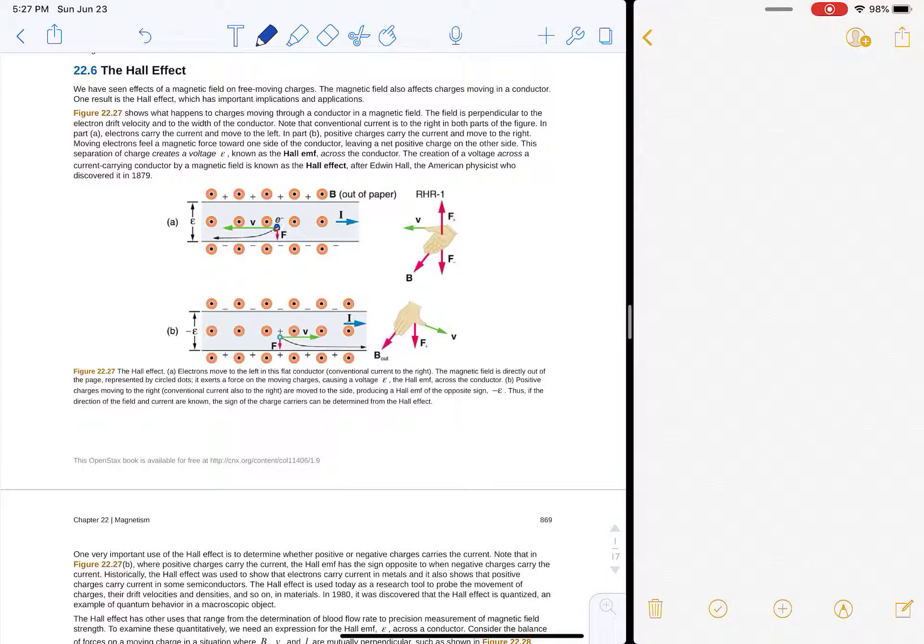The magnetic field is going to cause the electrons to be deflected to one side of the conductor, which ends up creating a separation of charge, positive and minus charges, which ends up creating a potential difference, an EMF, across the two ends of the conductor.